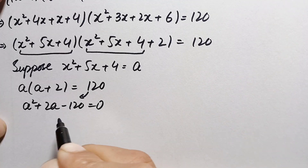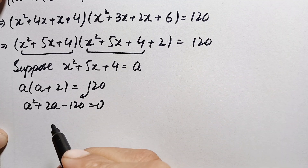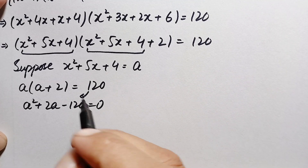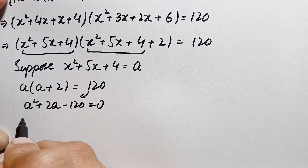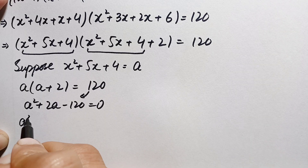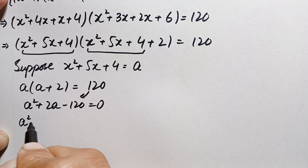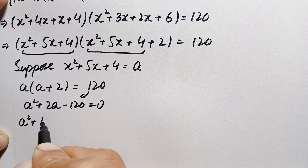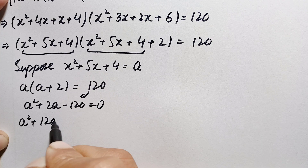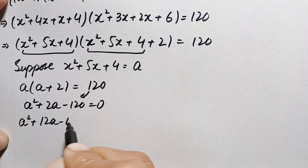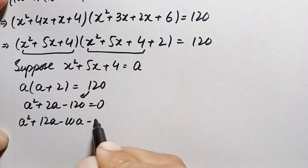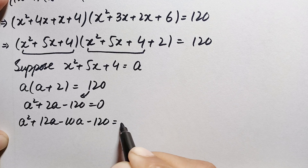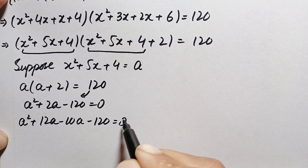Expanding a(a+2) gives a²+2a, so the equation becomes a²+2a−120 = 0. We can solve this quadratic equation by factorization. We rewrite 2a as 12a−10a, giving a²+12a−10a−120 = 0.